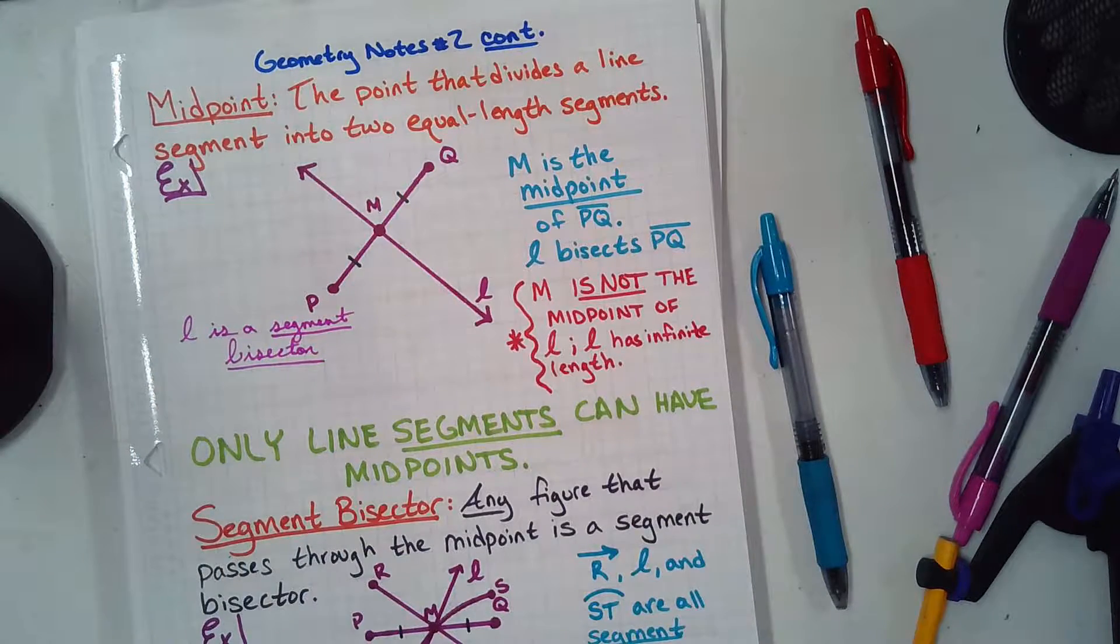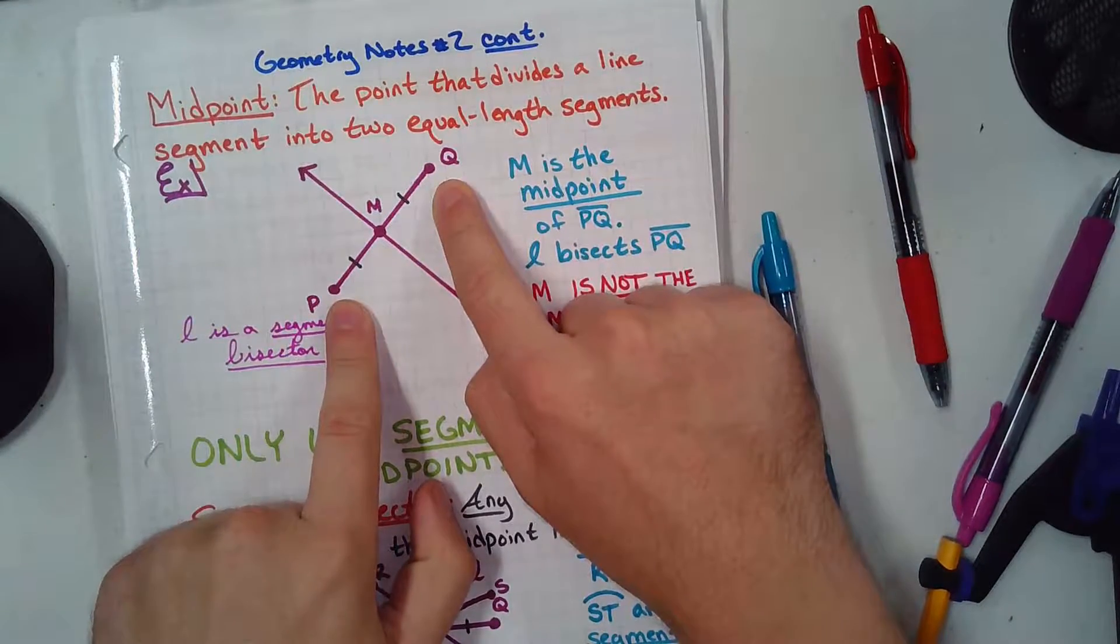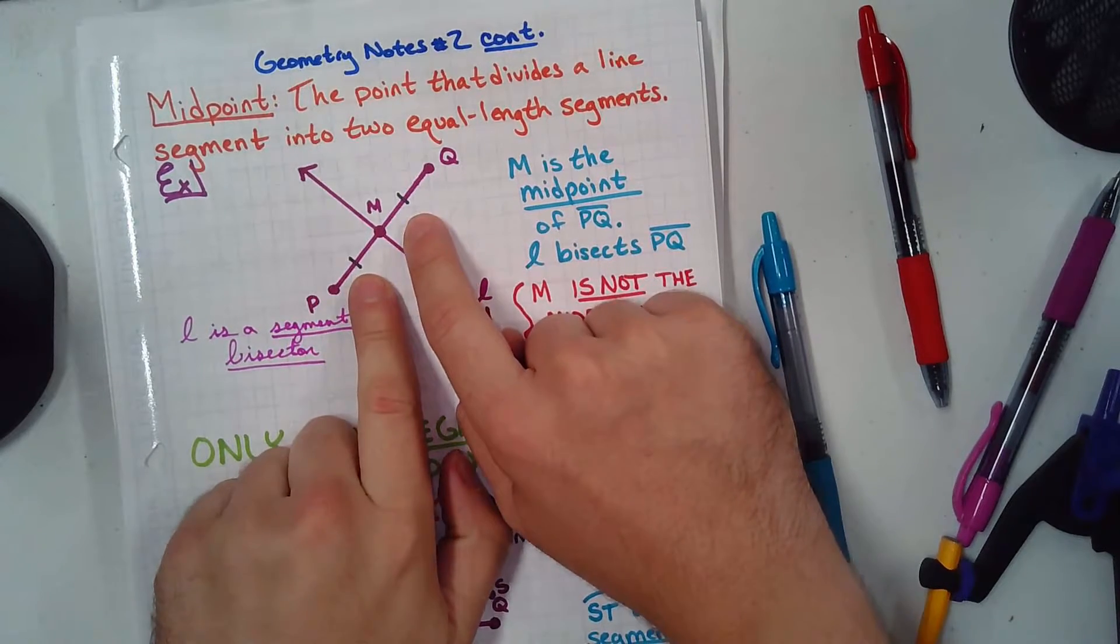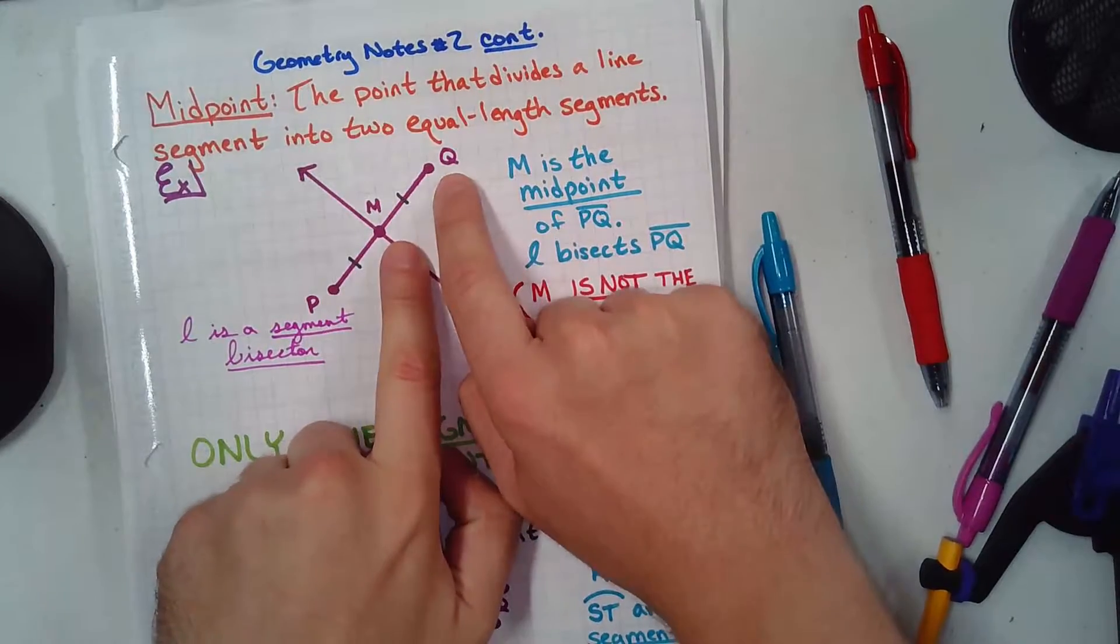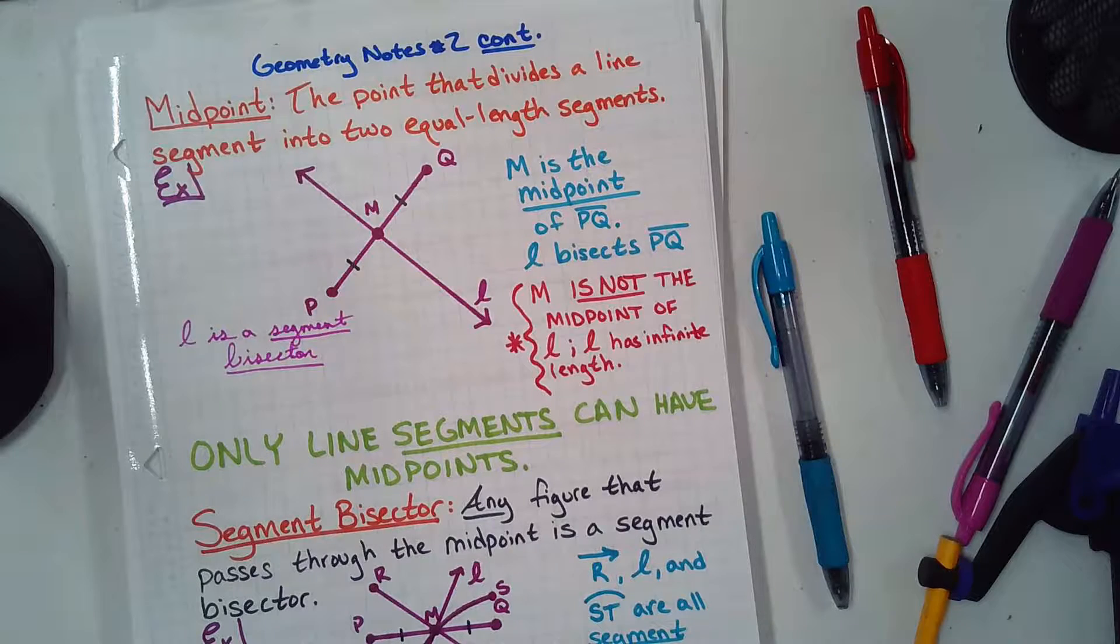So, it cuts the line segment in two. PQ is a line segment. You see it? What do you think M stands for? Midpoint. Very good. So, M is the point that divides it into PM and QM, and those two segments are congruent. Congruent is a fancy term that means equal, okay?